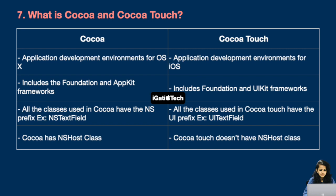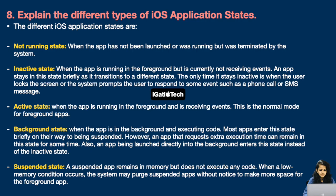Next question: what is Cocoa and Cocoa Touch? Cocoa is an application development environment for OS X, and Cocoa Touch is an application development environment for iOS. Cocoa includes the Foundation and AppKit frameworks, whereas Cocoa Touch includes Foundation and UIKit frameworks. In Cocoa, classes have the NS prefix, for example NSTextField. In Cocoa Touch, classes have the UI prefix, for example UITextField. Cocoa has NSHost class whereas Cocoa Touch does not.